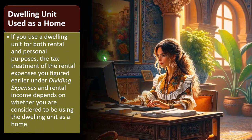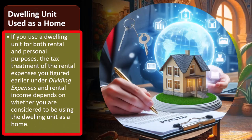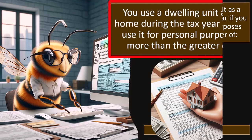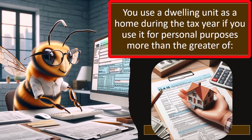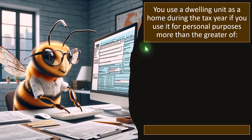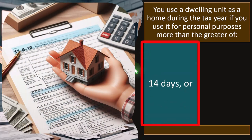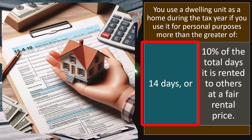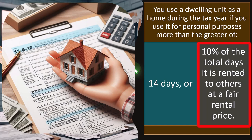Dwelling unit used as a home — what does that mean? If you use a dwelling unit for both rental and personal purposes, the tax treatment of the rental expenses depends on whether you are considered to be using the dwelling unit as a home. You use a dwelling unit as a home during the tax year if you use it for personal purposes more than the greater of: 14 days, or 10% of the total days it is rented to others at a fair rental price.